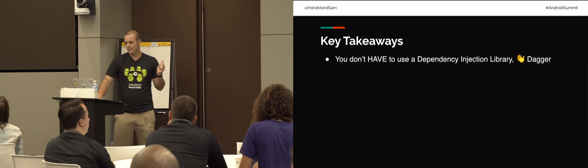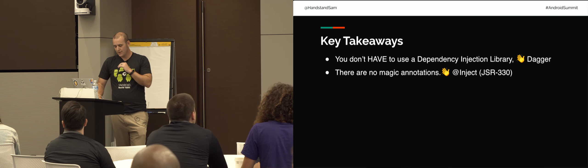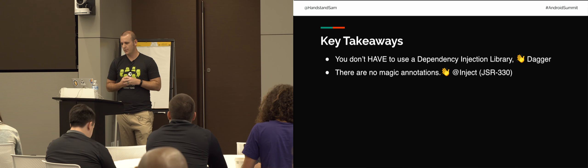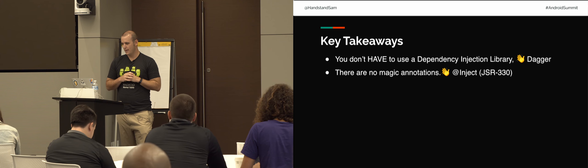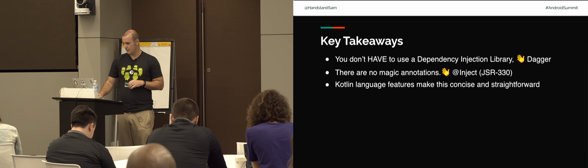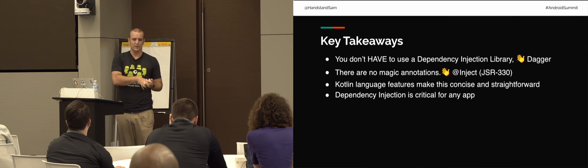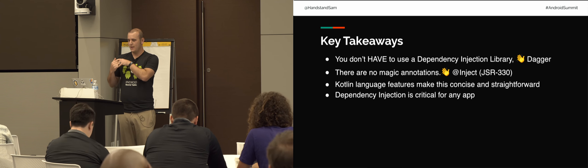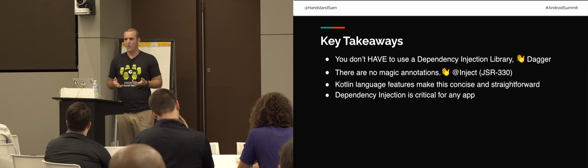Key takeaways: you don't have to use a dependency injection library — dependency injection is possible without having to use a library and it's not too crazy. There's no more magical annotations. The @inject annotation came out of Bob Lee who worked on the Guice project at Google — it's kind of where Dagger started from. The Kotlin language features I've mentioned really make this concise and straightforward. And dependency injection is critical for any app: if you're building an app that you want to do testing on, debug features, mock things out — you need the ability to swap dependencies in and out. You don't have to use something specific, but hopefully it makes sense about how you could do it yourself.